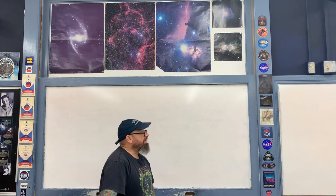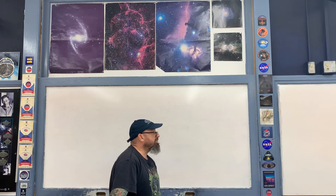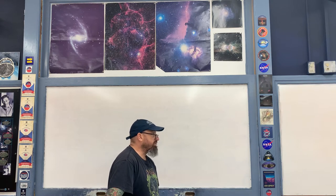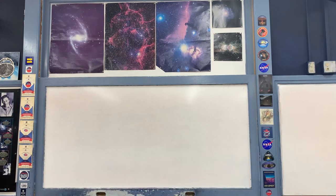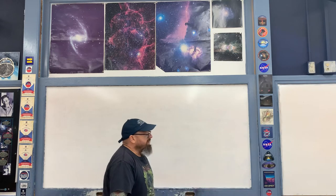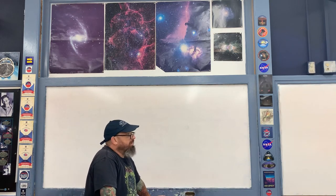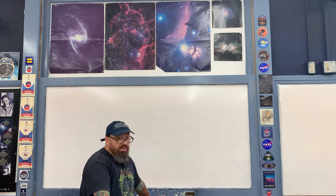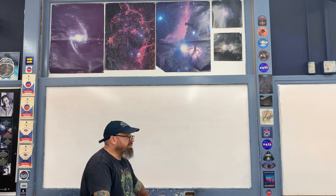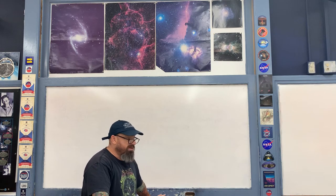An object initially at rest on a horizontal frictionless surface explodes into three pieces. The first piece has a mass of one kilogram and a speed of one meter per second in the positive x-direction after the explosion. The second piece has a mass of two kilograms at a speed of two meters per second at a 45-degree angle with respect to the positive x-direction. Part A asks: what is the velocity of the third piece if its mass is three kilograms?